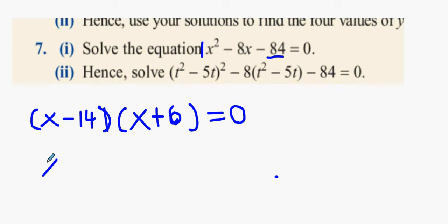Next thing, x minus 14 equals 0, or sorry, x minus 14. Or x plus 6 equals 0. Then what happens when you move it over? x equals 14 and x equals minus 6.